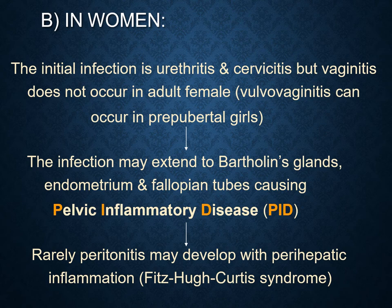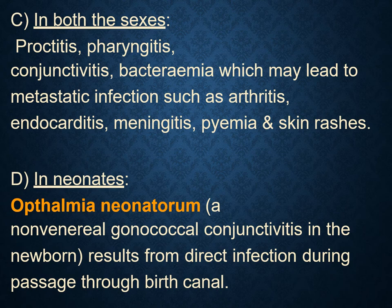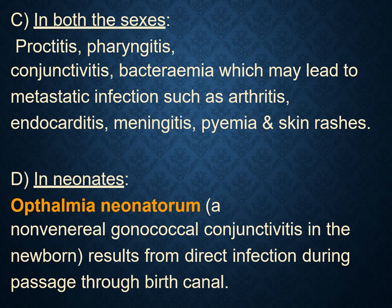Perihepatic inflammation may develop, which is known as Fitz-Hugh-Curtis syndrome. In both cases, infection of Neisseria gonorrhoeae leads to proctitis, pharyngitis, conjunctivitis, bacteremia, and finally metastatic infections such as arthritis, endocarditis, meningitis, septicemia, and skin rashes. In neonates, it causes ophthalmia neonatorum, a gonococcal conjunctivitis in newborns resulting from direct infection during birth through the birth canal. With this, I think you have got an idea about the morphology, biochemical characteristics, and pathogenicity of Neisseria gonorrhoeae. I will meet you in the next presentation with the laboratory diagnosis and treatment of Neisseria gonorrhoeae. Thank you.